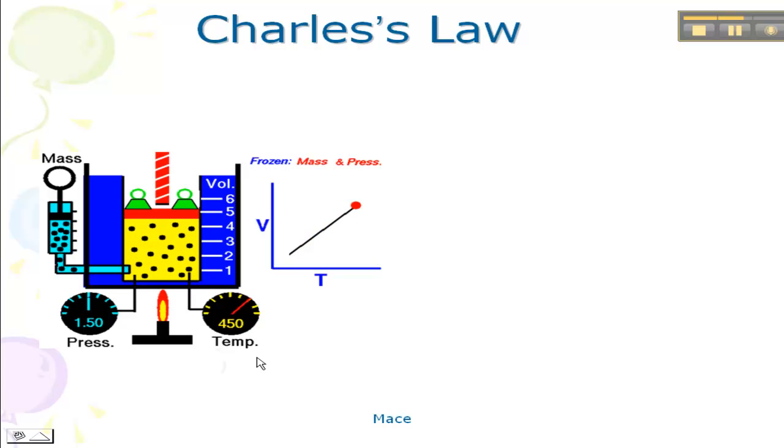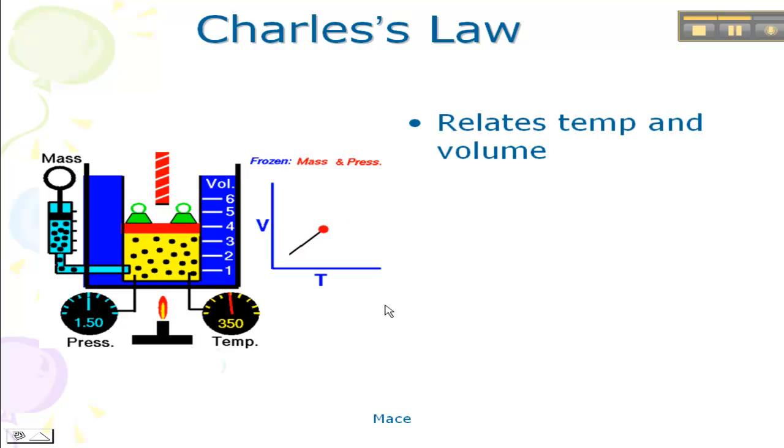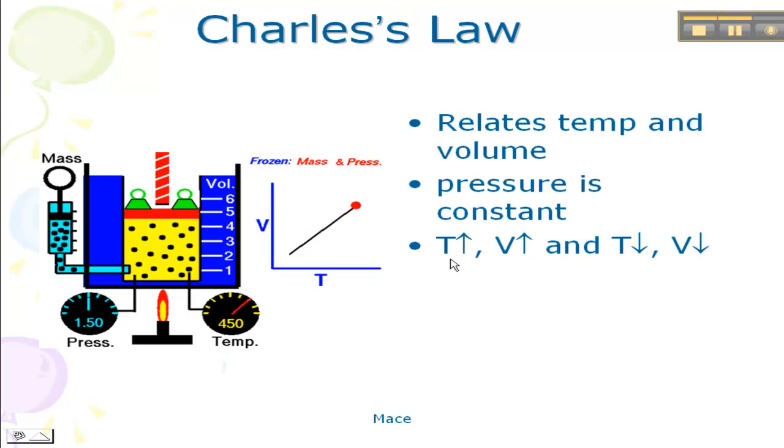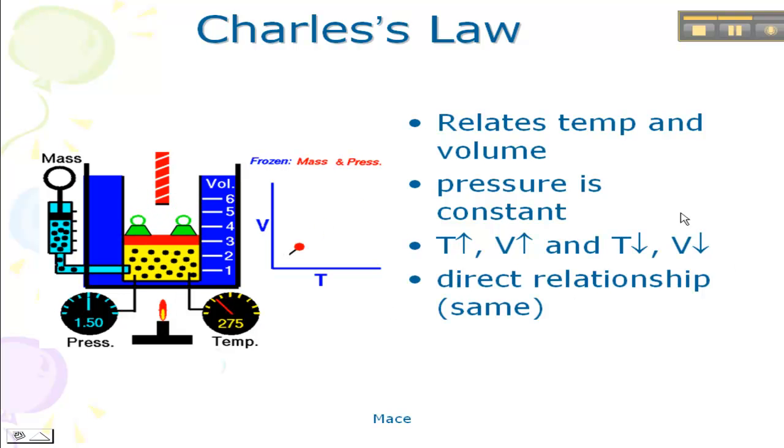So as we increase the temperature, we start at 250, we go to 450, we are causing the particles to move faster and faster and to spread out more and more, which causes the volume to increase. So this is what we call a direct relationship. The temperature increases, the volume also increases, and vice versa. If the temperature is decreased, the volume is going to decrease.